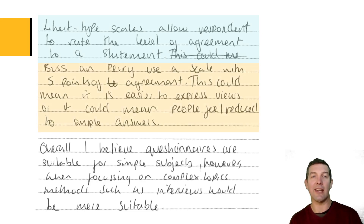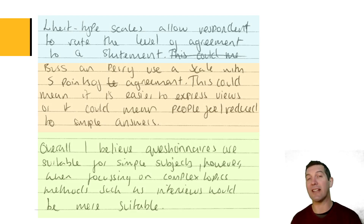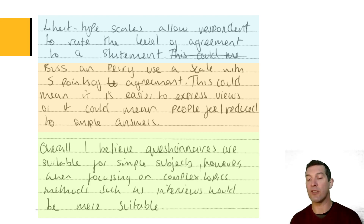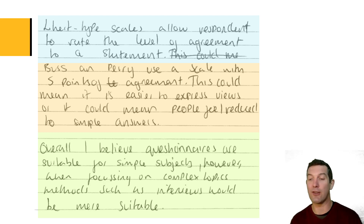Finally, there's a little more AO1, another link to Buss-Perry, and a conclusion. Conclusions are important for reaching the higher mark bands for AO3 evaluation. They don't necessarily have to come at the end — teachers and examiners should look for conclusions throughout the answer — but it's a good idea to ensure you have one at the end, as this answer does.